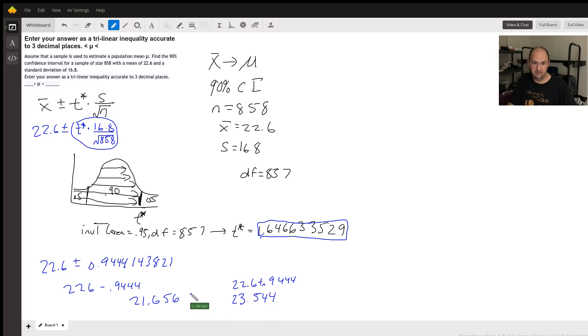This means we're 90% confident that the true mean μ falls between 21.656 and 23.544.